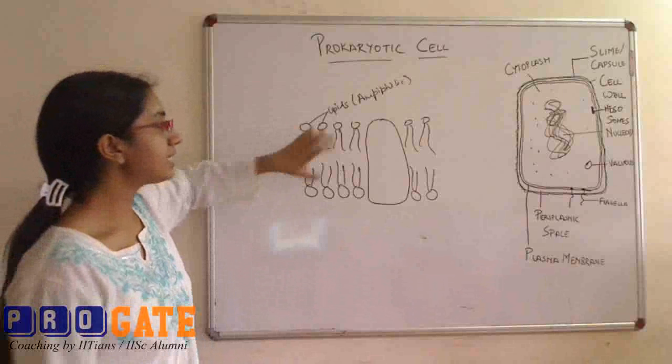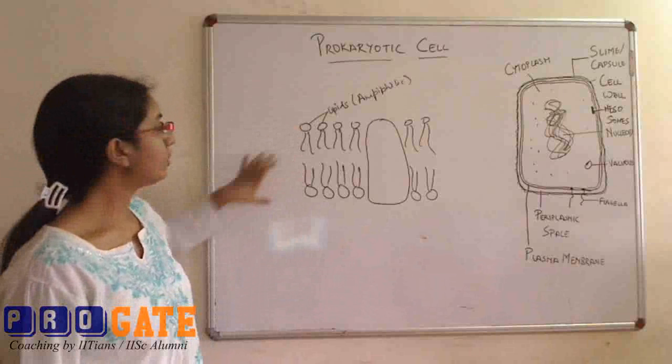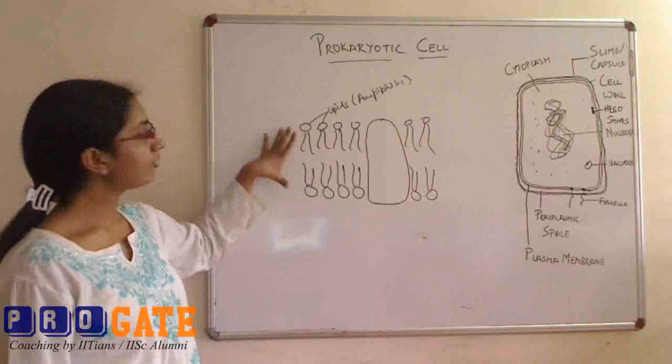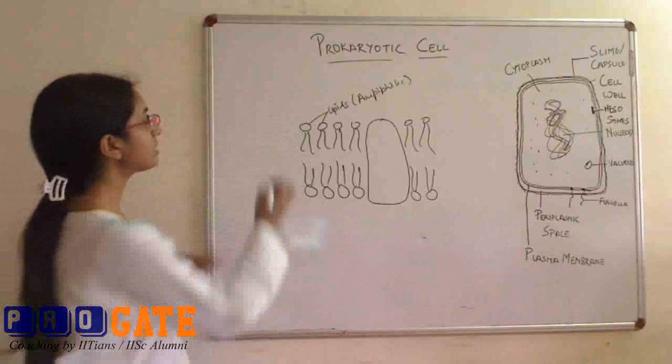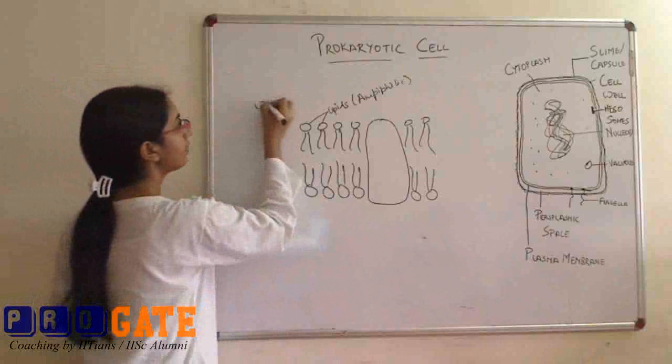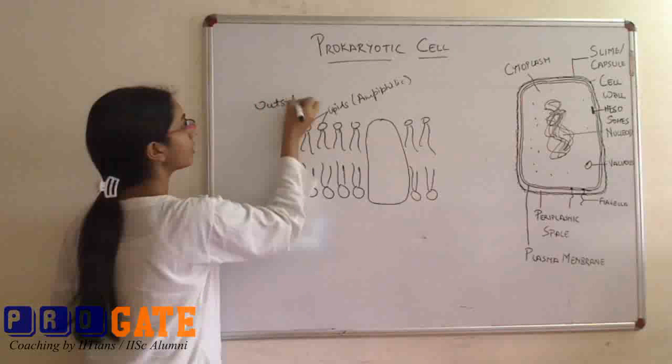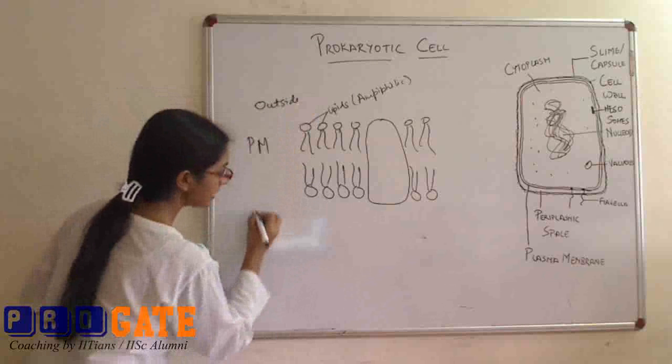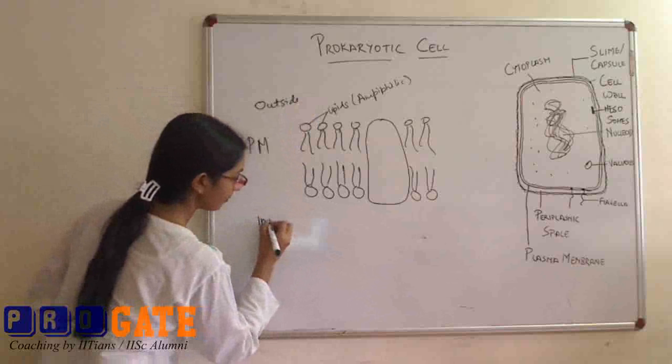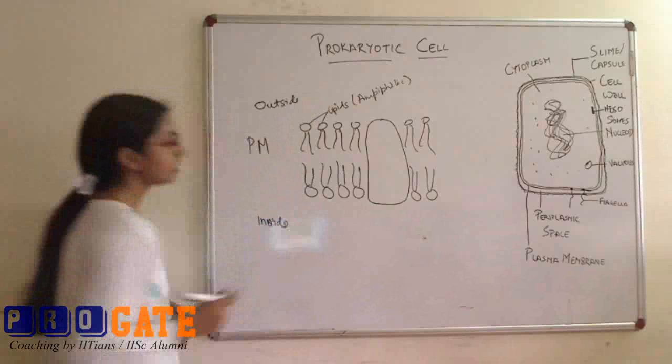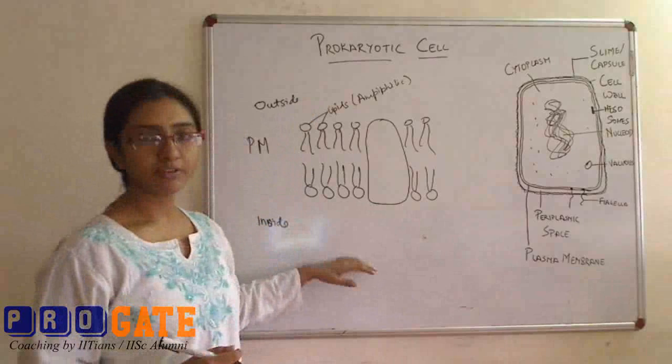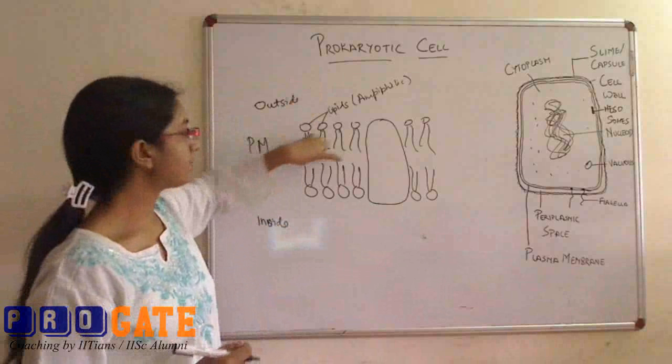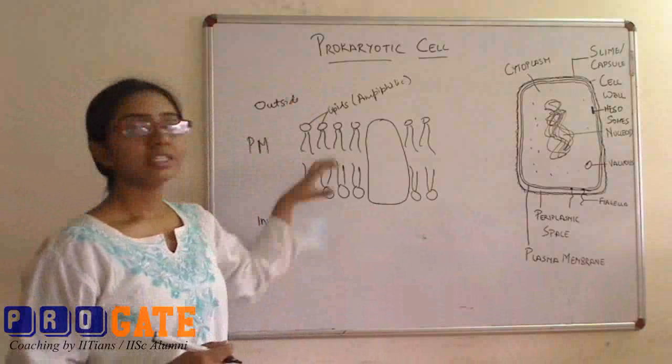These lipids orient themselves into a bilayer format where the hydrophobic end is submerged and the hydrophilic ends are towards the outside. This is the outside of the cell, this is the plasma membrane, and this is the inside of the cell. This side we have water, this side also we have water, and we have this plasma membrane.